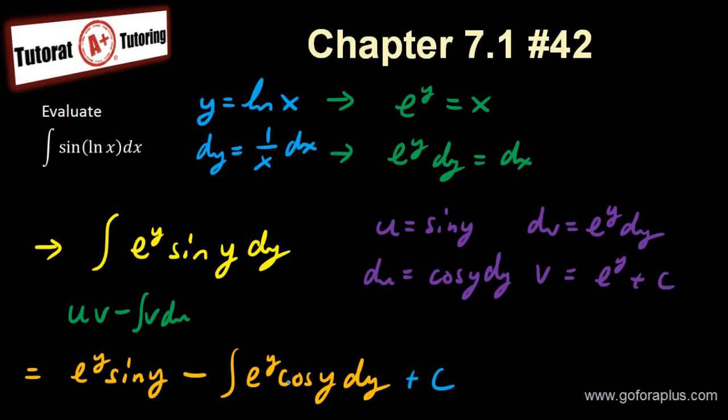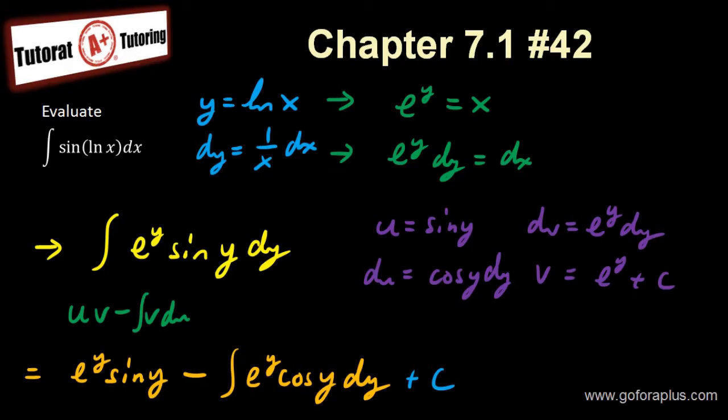Now I have something like this. Obviously I already have a plus c. You can write that at the end. Just don't forget about that. Now what happened here is saying that minus integral of this. This is basically, again, integration by parts. You do the same thing again.